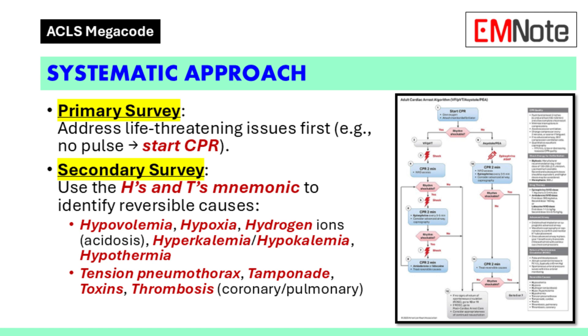Additional reversible causes in the H's and T's mnemonic include hypothermia, tension pneumothorax, tamponade, toxins, and thrombosis in either the coronary or pulmonary systems.